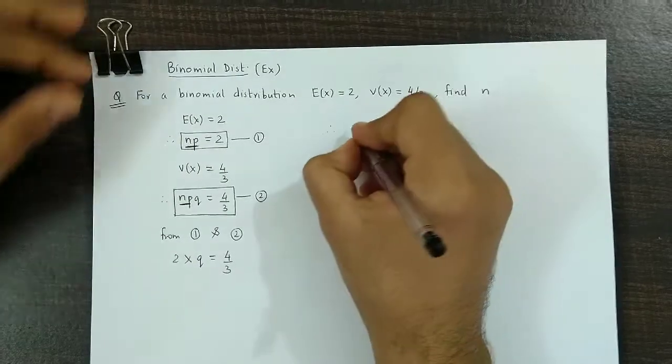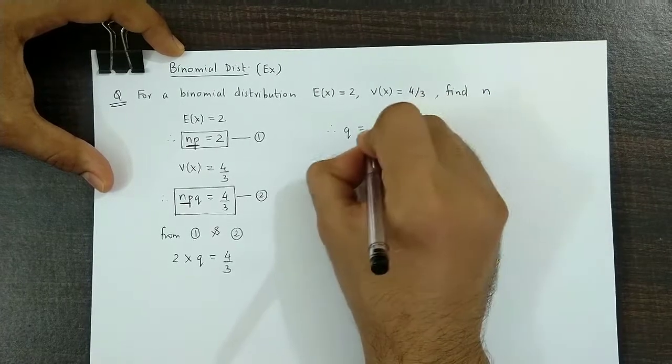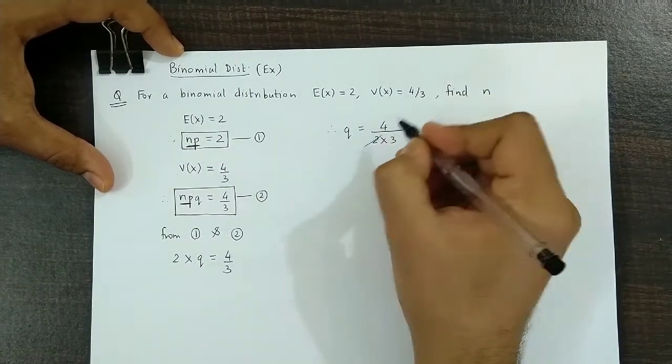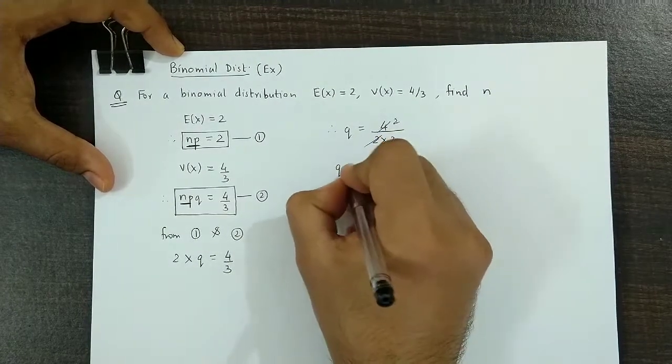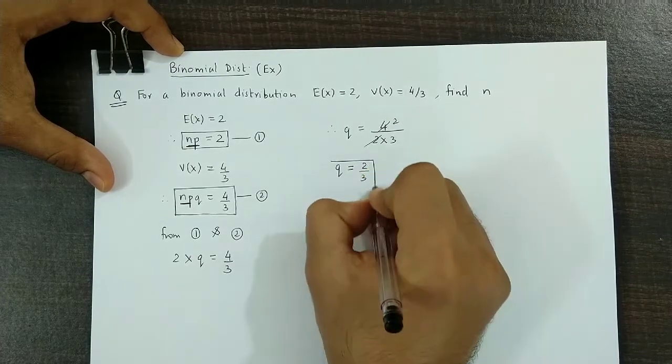Therefore we could say Q is equal to 4 upon 2 into 3. So probability of failure is 2/3.